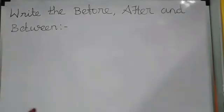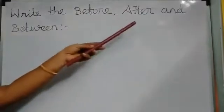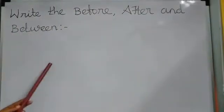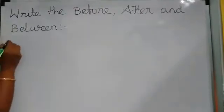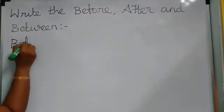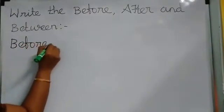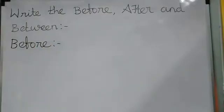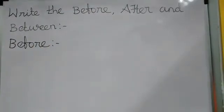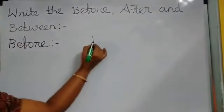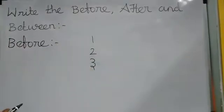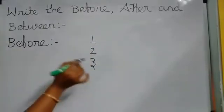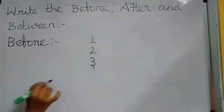Next, we'll see before, after, and between numbers. First of all, we'll see before numbers. What is the before number? Before means the friend number — the number that comes before. Here: 1, 2, 3. What comes before 2? 1. What comes before 3? 2.